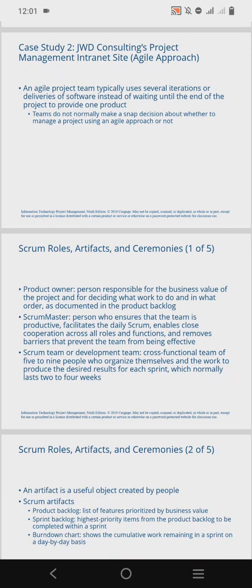The Scrum team or development team is a cross-functional team of five to nine people — meaning people from different areas of an organization work together. They organize themselves and the work in order to produce the desired results for each sprint, which normally lasts two to four weeks.